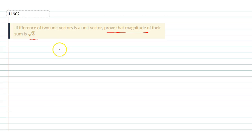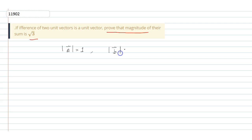Let's say we have two vectors, A vector and B vector. We are given that the magnitude of A vector is 1, which means A vector is a unit vector. Similarly, the magnitude of B vector is also equal to 1, so this is also a unit vector.